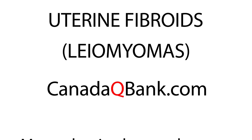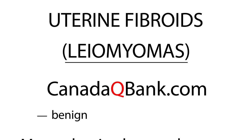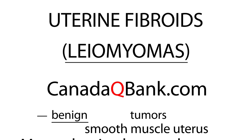Uterine fibroids, or leiomyomas, is the topic for this video. Uterine fibroids are benign — progression to cancer is extremely rare. They are benign tumors of the smooth muscle in the uterus, representing the most common pelvic tumor, occurring in as much as 70 percent of women by age 45, so they are very common.